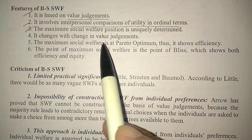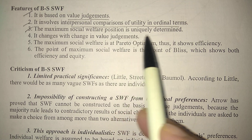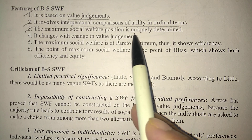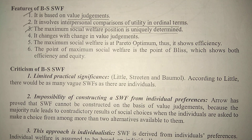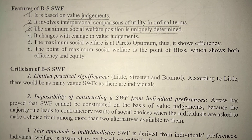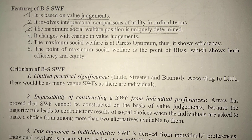The maximum social welfare position is uniquely determined. The equilibrium that is formed in this chapter, which we explained in Part 3 and Part 4 of the videos — that equilibrium is one single point, a unique point.